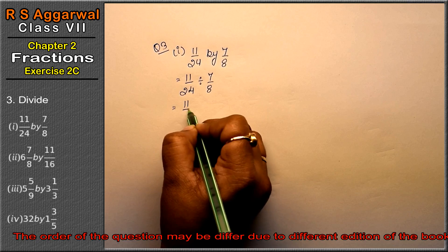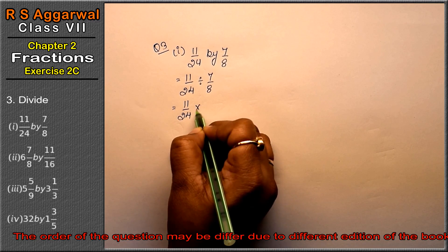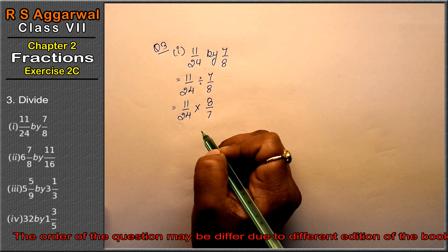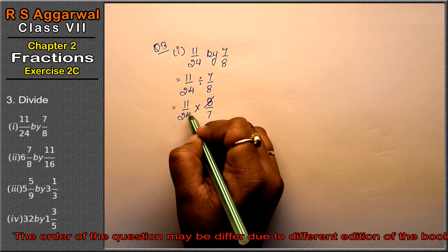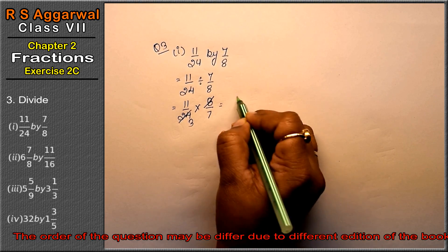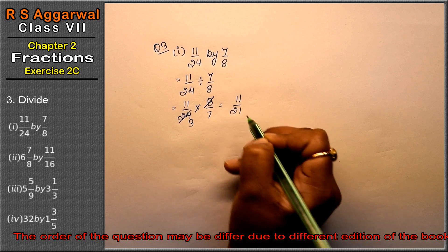Now when we divide by 11/24, the other digit will be reciprocal. Right friends? Now look, 8 times 3 is 24. How much is it? 11/21 is the answer.